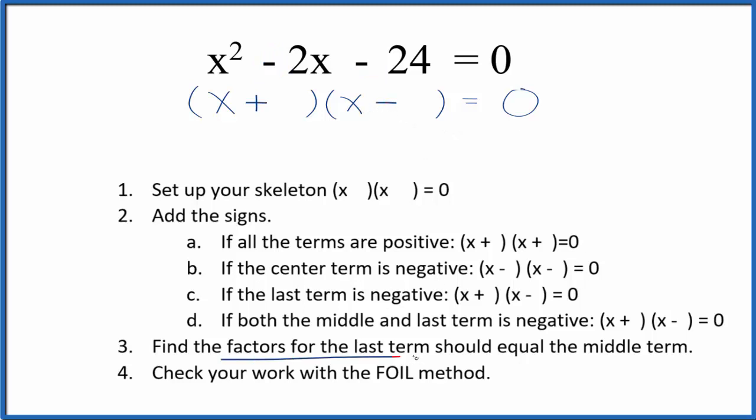Now we'll find the factors for the last term, that's the minus 24, that are going to equal the middle term. That's this minus 2x here. So 24, we could have 1 times 24, 2 times 12, 3 times 8, or 4 times 6. Those are the factors.